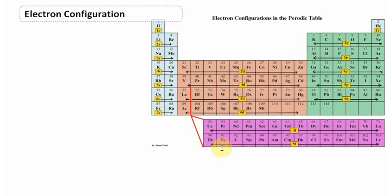Hey guys, it's Mr. Post, and on today's video we'll be doing electron configurations. This is not necessarily a teaching of how to do electron configurations, but more so examples of electron configurations. We're going to roll through the first several elements and find out where the electrons are located and express that using electron configuration — simply a method scientists use to let the world know where electrons are located in the electron cloud.